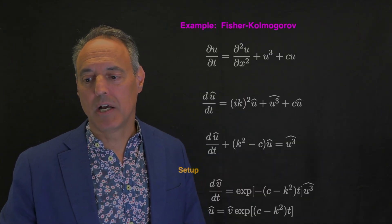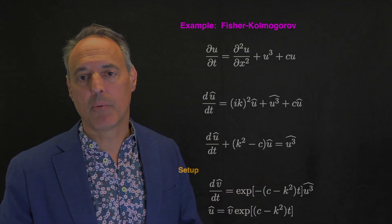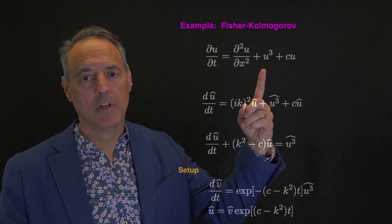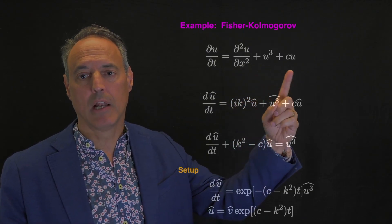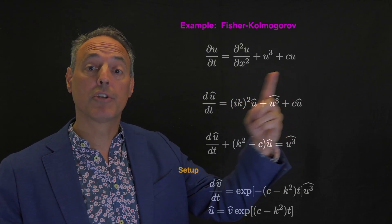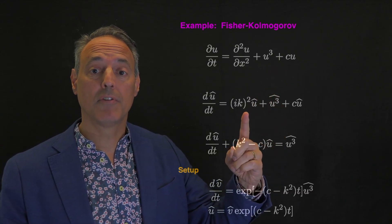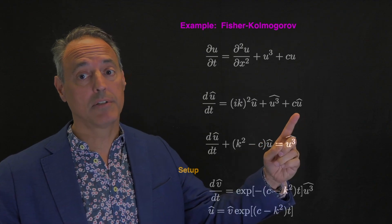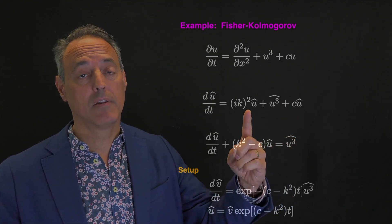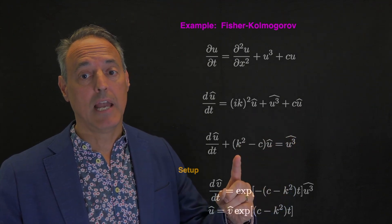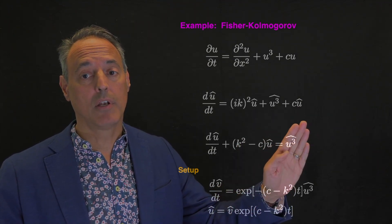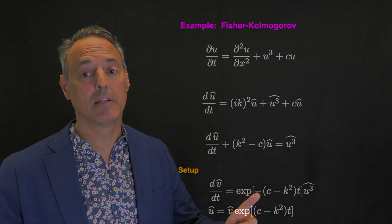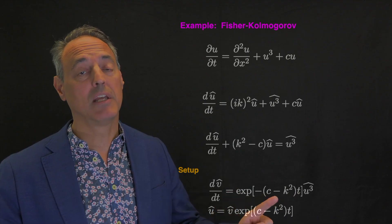So let's explicitly represent this in a specific example. What we're looking at here is the Fischer-Komagorov equation. It's got a diffusion term, a cubic, and a linear term. And so what I can do is Fourier transform this. So the Fourier transform of the second derivatives pops in ik squared. And then you have the Fourier transform of the nonlinearity, not much you can do there, plus Fourier transform of a linear term. I can combine this term with the linear term. And if the cubic weren't here, I could solve this explicitly. And here's the solution, e to the minus (c - k²)t. So that's my integrating factor.